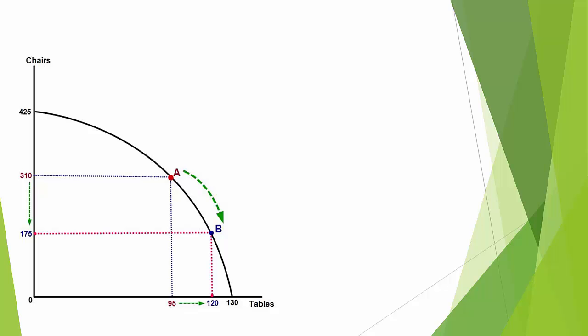Let's say we have a pile of wood and we can make chairs or tables. We've chosen to operate initially at point A, which allows us to make 310 chairs and 95 tables. We could make a maximum of 425 chairs if we make zero tables, or 130 tables if we make zero chairs — but point A gives us some of both.